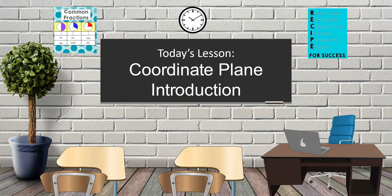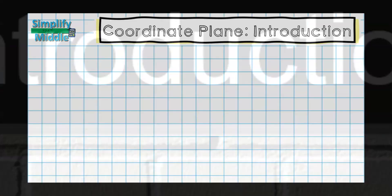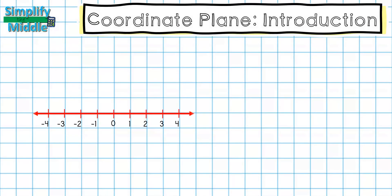Hi and welcome to today's lesson: coordinate plane introduction. We'll first start by looking at a number line — the same type of number line we learned when talking about positive and negative values and integers. This is called a horizontal number line because of the way it lays across. We can think of this as the sun coming up over the horizon, so that's horizontal.